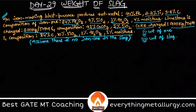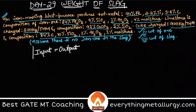So we have the compositions of all inputs and also the composition of the hot metal output. We are asked to calculate the weight of ore and the weight of slag. The first basic rule in material balance: the mass of any constituent in the input must always be equal to the output. It is also given that there is no iron loss going into the slag — no iron is present in the slag.